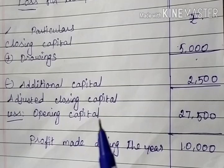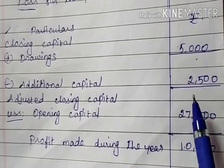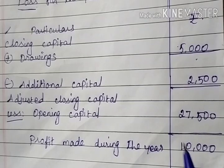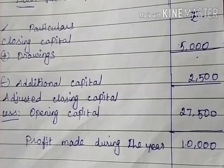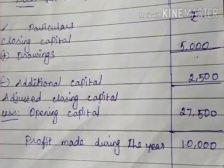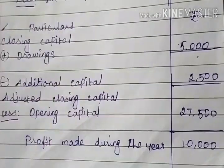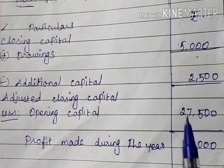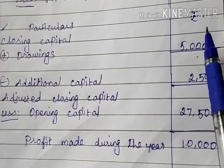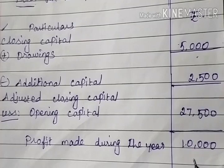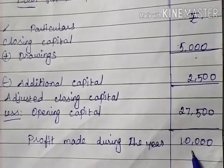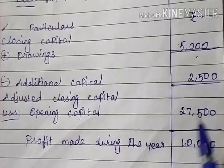The question is: what amounts are mentioned? Drawings, additional capital, opening capital, and profit — there are no details for closing capital. We need to calculate and find the closing capital. What method is used? Just follow the same format as before. Fill in the drawings and enter the format: additional capital, opening capital, profit.